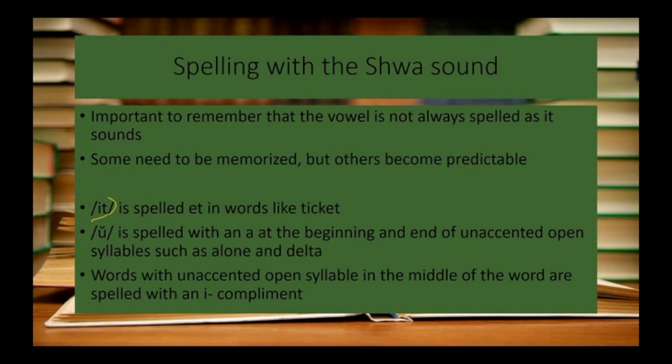We talked about the 'it' sound when we spell it as E-T in words like ticket. The 'uh' sound is spelled with an A at the beginning and end of unaccented open syllables — examples are words like alone and delta. Words with unaccented open syllables in the middle of a word are spelled with an I — for instance, compliment.